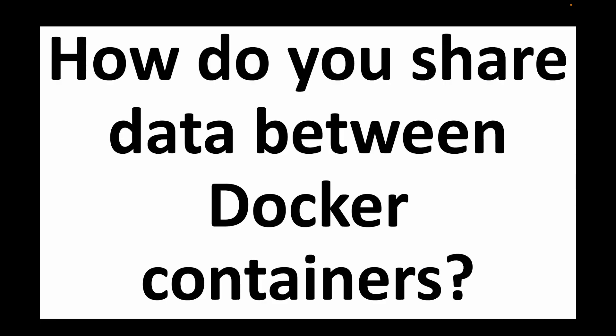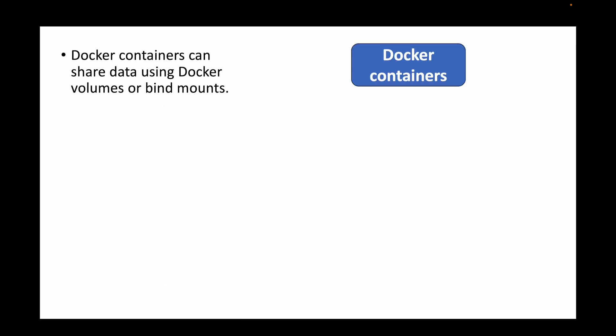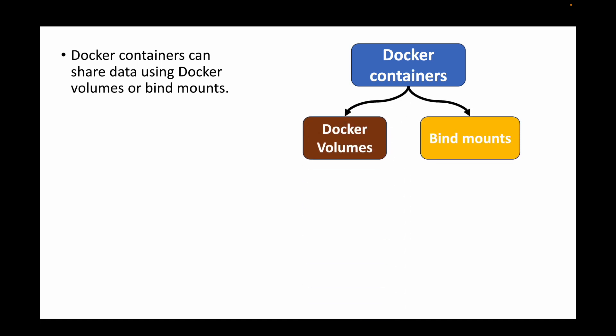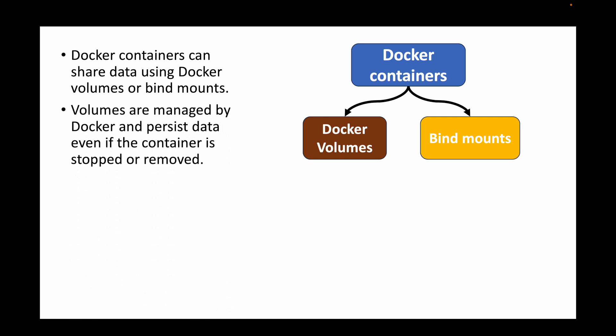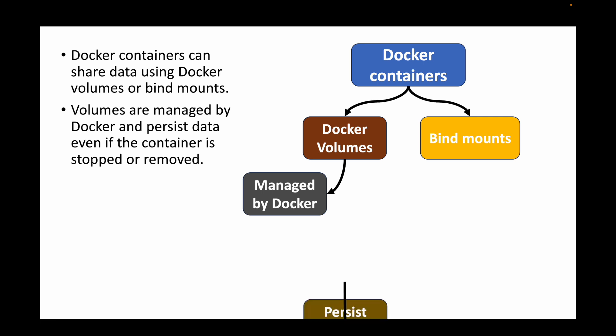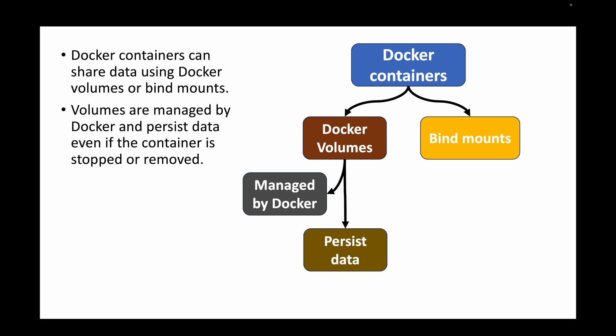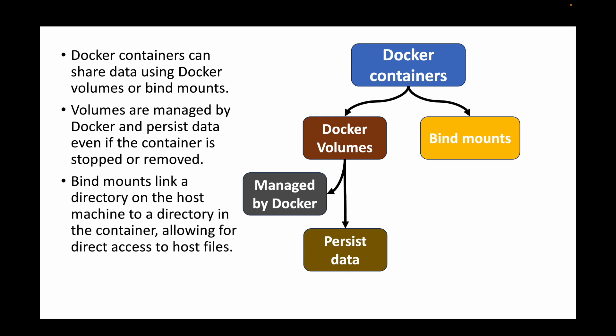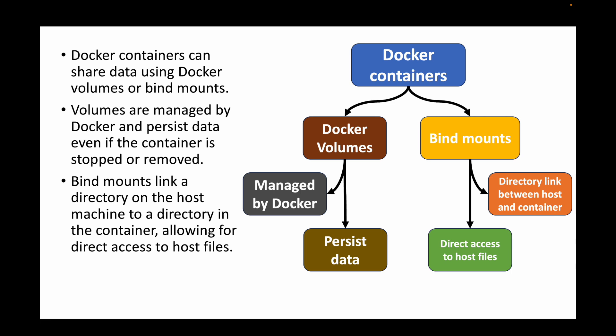The next question is: how do you share data between Docker containers? We can use Docker volumes or bind mounts. Volumes are managed by Docker and are used when you want to persist data even if a container is stopped or removed. Bind mounts, on the other hand, create a directory link between your host and your container, allowing direct access to the host file system. Both options can be used to share data between containers or between a host machine and containers.